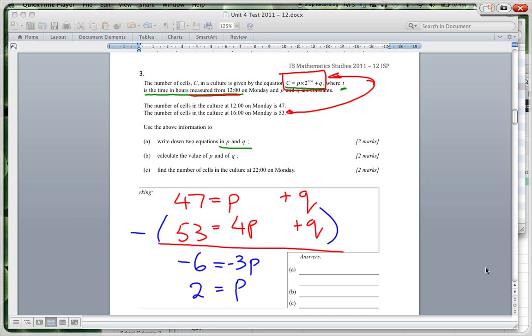So I've got P equals 2. And then putting it back in here, I could use either one of these equations. So this becomes 2. 47 equals 2 plus what? It must be 45. 45 plus 2 equals 47. So we've got for P and Q, P equals 2, Q equals 45.